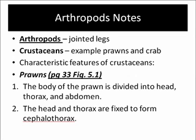The first group I want to talk about are crustaceans, and two examples of crustaceans I want to talk about are prawns and crabs. Let's look at the characteristics or features of crustaceans. You need to make sure that you do page 33, figure 5.1, which is a picture of a prawn, and add that to your notes.